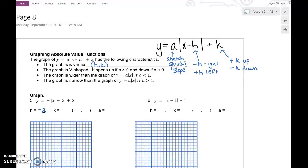So your h value is opposite of what you see because the original function had minus h. The k value is perfectly normal, so our vertex is negative 2, 3. The a value, what's the a value for number 5? Negative 1.